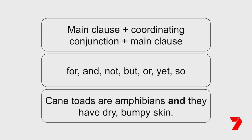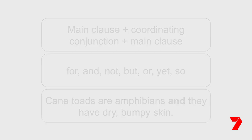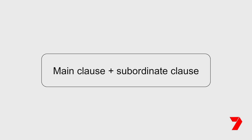A complex sentence contains one main clause and one or more subordinate clauses. This means there is one main clause which would make sense on its own, and one subordinate clause which does not make sense on its own. The subordinate clause can go at the beginning, in the middle, or at the end of a sentence.